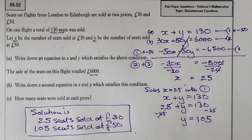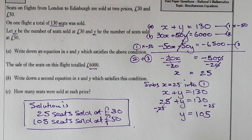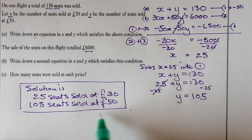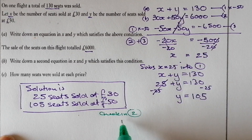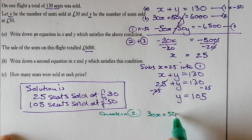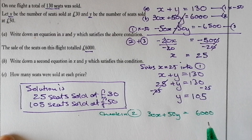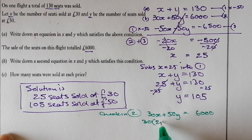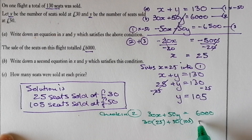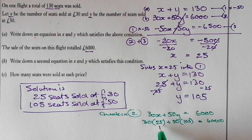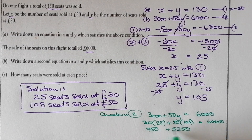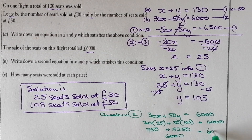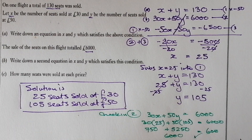We can check our answer — always a good idea in an exam. Substituting into equation two: 30x + 50y = 30 times 25 plus 50 times 105 = 750 plus 5,250 = 6,000. That equals our target of £6,000, confirming our answer is correct.